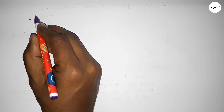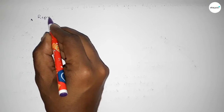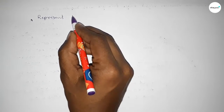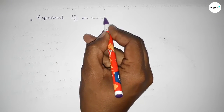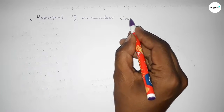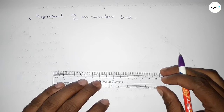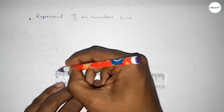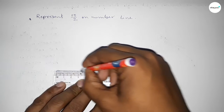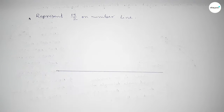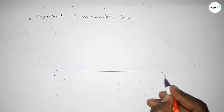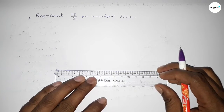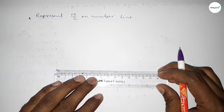Hi everyone, welcome to SSR Classes. Today in this video we have to represent 15 over 2 on a number line. Let's start the video. First of all, we have to draw a number line — drawing a line of any length, marking an arrow and taking points A and B.